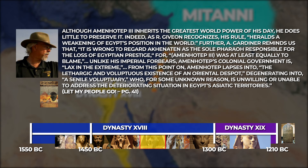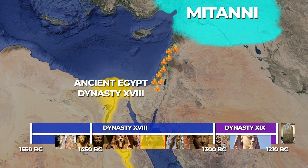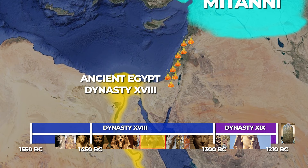Further, A. Gardner reminds us that it is wrong to regard Akhenaten as the sole pharaoh responsible for the loss of Egyptian prestige, for Amenhotep III was at least equally to blame. Unlike his imperial forebears, Amenhotep's colonial government is lax in the extreme. From this point on, Amenhotep lapses into the lethargic and voluptuous existence of an oriental despot, degenerating into a senile voluptuary who, for some unknown reason, is unwilling or unable to address the deteriorating situation in Egypt's Asiatic territories. Given the highly propagandistic tendencies of the pharaonic courts, it is plausible that much of what was communicated about Amenhotep III was not an accurate picture of Egyptian stability. Living off of the spoils and influence of his predecessors, the once mighty 18th dynasty of Egypt begins a rapid decline over the course of his reign.